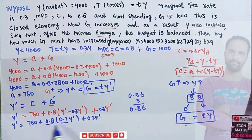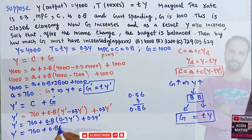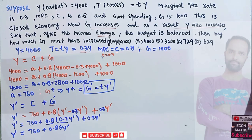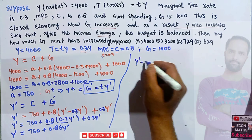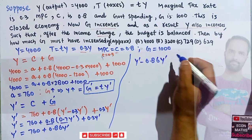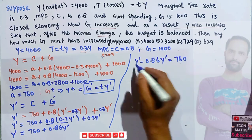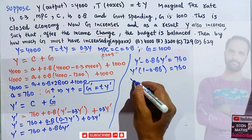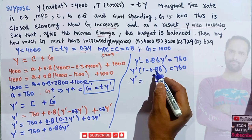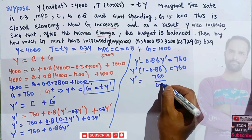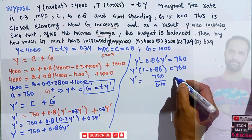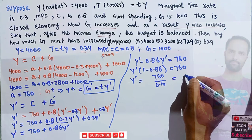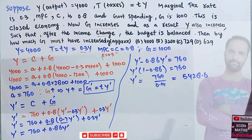So we have Y' = 760 + 0.86Y'. Solving: Y' - 0.86Y' = 760, which gives Y'×(1 - 0.86) = 760, so Y'×0.14 = 760, and therefore Y' = 760 / 0.14 = 5428.6.